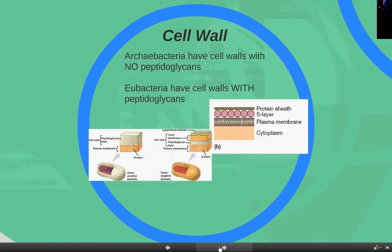Archaeobacteria have cell walls with no peptidoglycans, while Eubacteria cell walls do have peptidoglycans. That's just a type of glycoprotein — it's a biochemical difference between the two. By popular theory, archaeobacteria are the older of the two evolutionarily speaking, and that peptidoglycan complex had not yet formed when this cell structure first evolved. So it's one of the ways that one group was split into two.